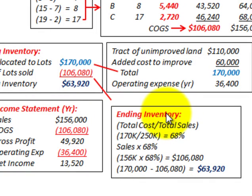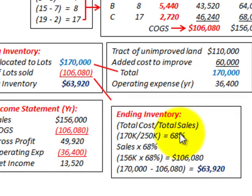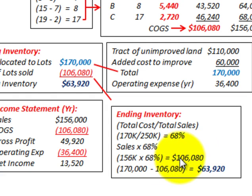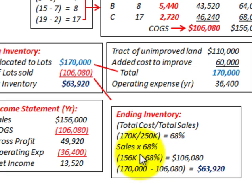We can also calculate ending inventory another way. Take total cost of $170,000 divided by total sales of $250,000, which gives approximately 68%. Then take the year's sales of $156,000 times 68%, which equals $106,080 — our cost of goods sold. Subtracting that from the total cost of $170,000 gives us the same ending inventory of $63,920.